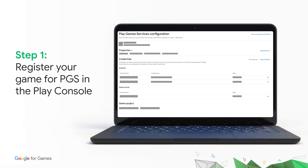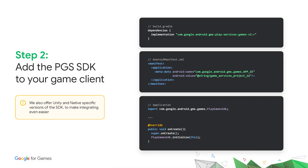Let's take a look at the three steps to integrate PGS within your game. First, you'll need to go into the Play Console, which you use today to distribute your games among many other features. There's a dedicated Play Game Services section within the console, which will walk you through the steps needed to configure your PGS project so that your client code can call our APIs. Next, you'll need to pull in the Play SDK in your game client. In this example we are using Java and Gradle; however, we also have native and Unity SDKs. You'll pull in the PGS SDK, specify your game's PGS project ID in the Android manifest, and finally instantiate the SDK in your application class.